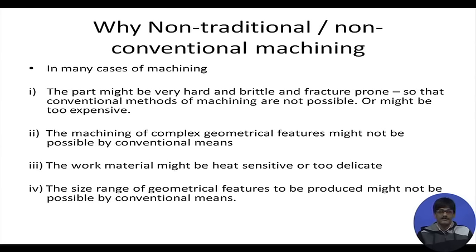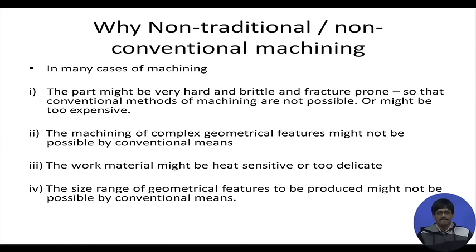If we try to machine a hard and brittle work piece, it will fracture, spoiling the blank so the final work piece cannot be made. Secondly, machining of complex geometrical features might not be possible by conventional means — the feature is so complex it cannot be made, or if it can, it becomes very expensive, requiring part-specific tooling that is not cost-competitive.